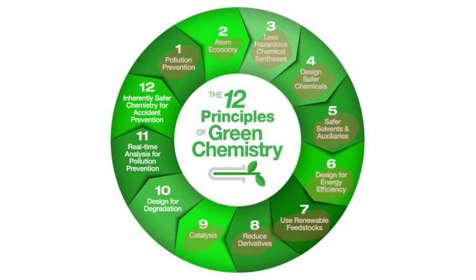Number nine is catalysis — catalytic reagents are superior to stoichiometric reagents, so making use of those is preferred. Number ten is designing for degradation: chemical products should be designed so that at the end of their function, they break down into degradation products that don't persist in the environment. Number eleven is real-time analysis for pollution prevention — analytic methods need to be further developed to allow for real-time in-process monitoring and control prior to the formation of hazardous substances.